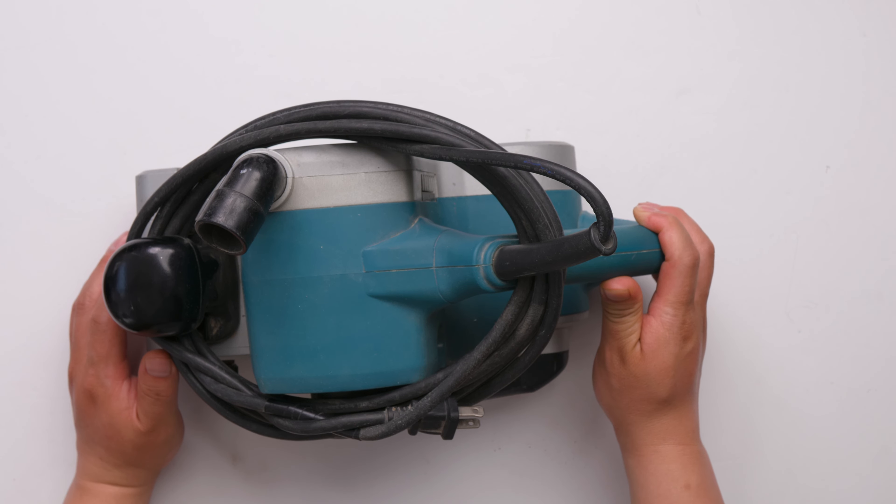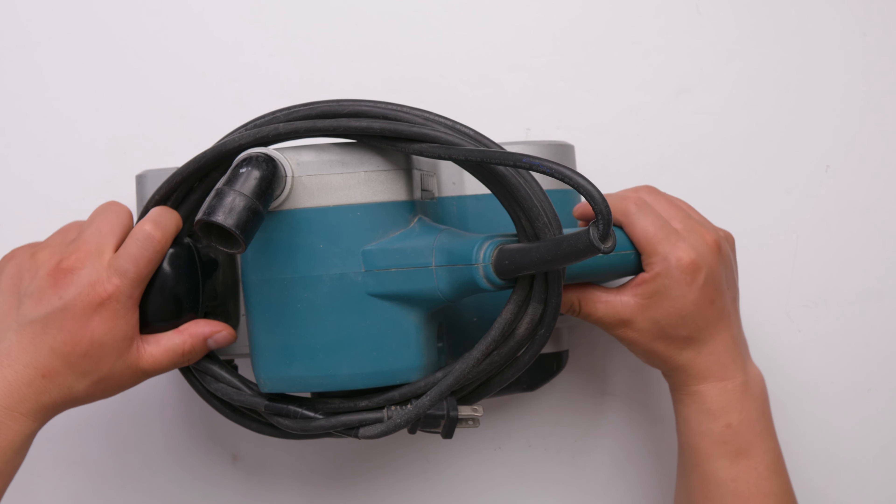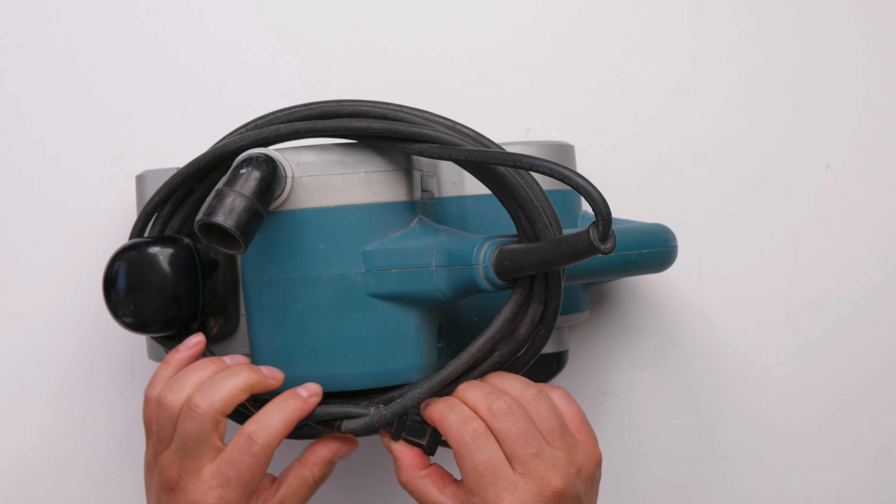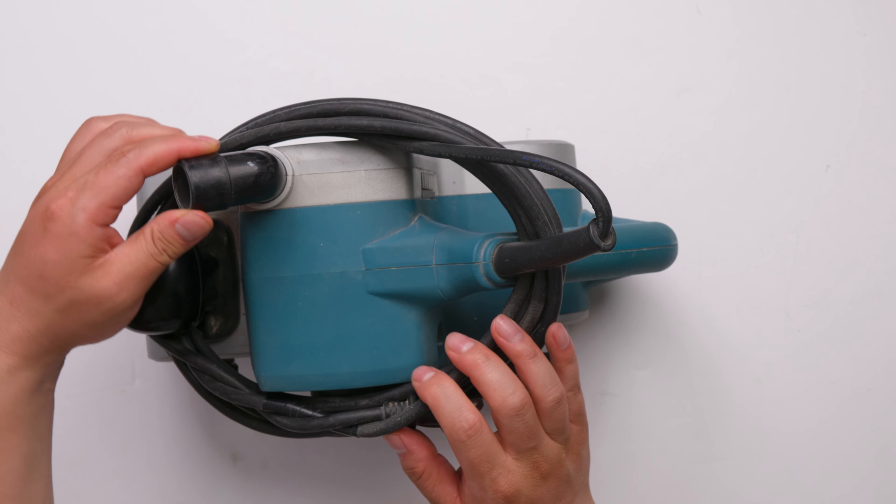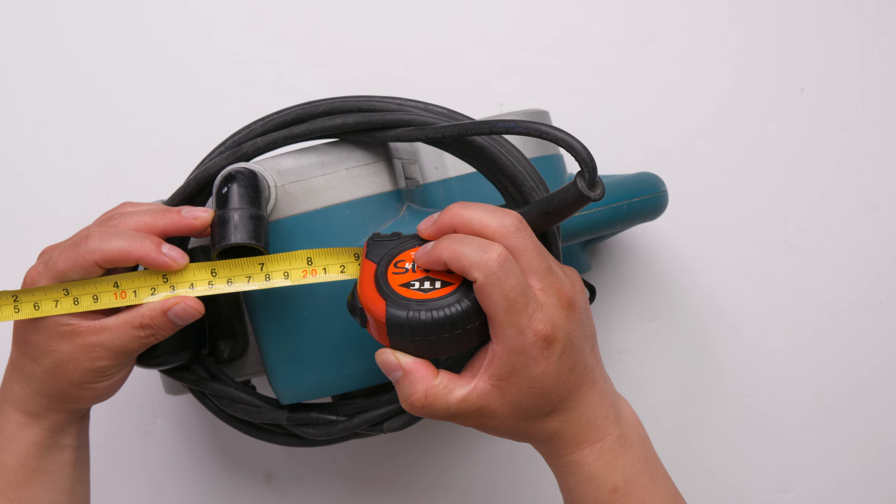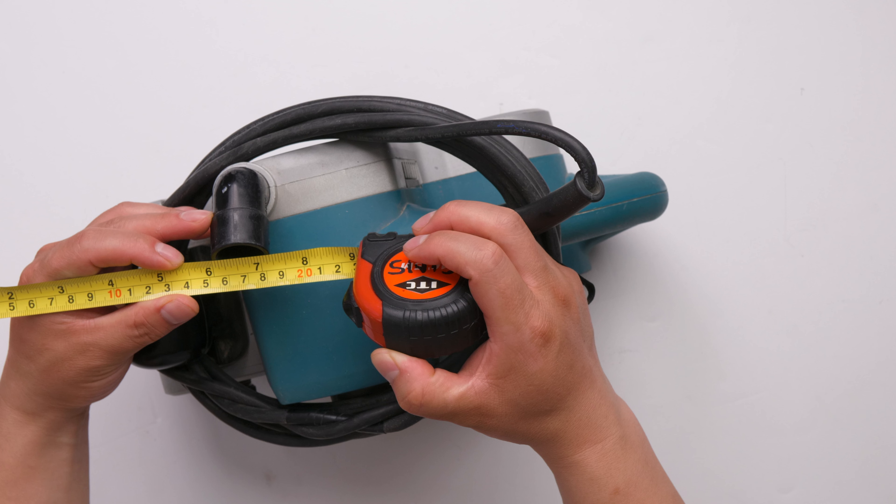This is a Makita 4 inch by 24 inch belt sander. It's a very heavy, corded belt sander that comes with a dust port. The inner diameter of the dust port is one inch.